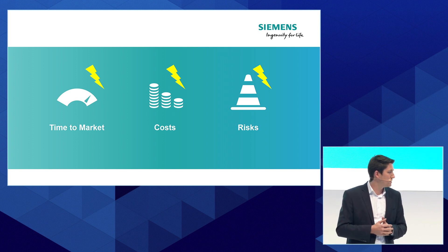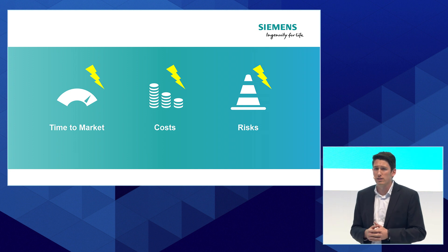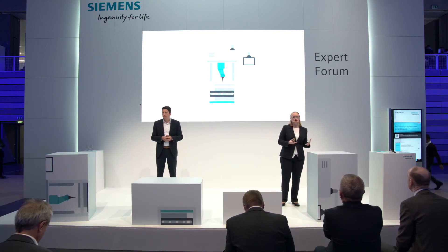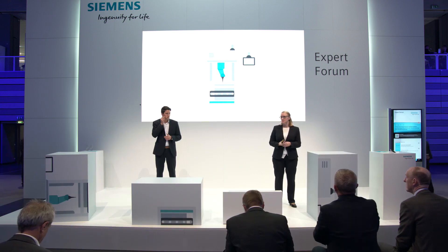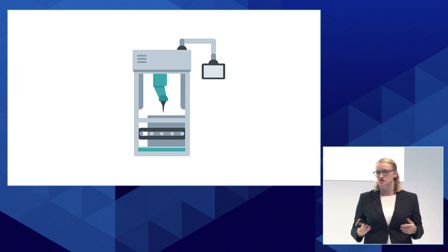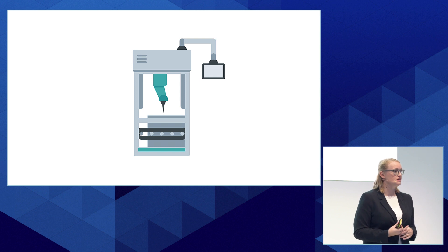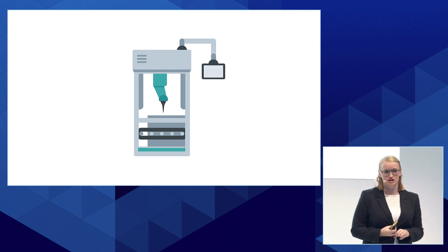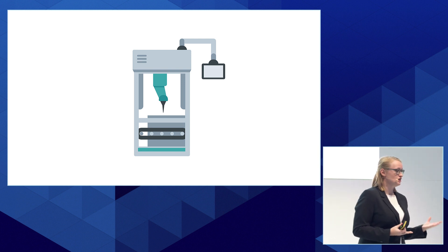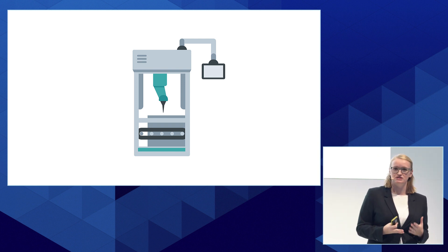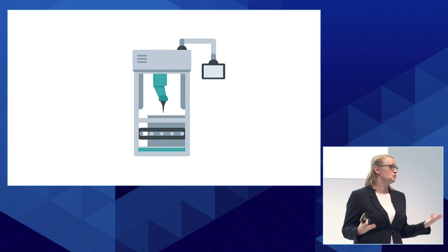But the question is, what are the effects of these challenges? Let's assume we have to develop this machine. In the traditional development process, each development step is proceeded serially. This means, first of all, you define the mechanical concept of a machine. Afterwards, you start with the mechanical construction. This is then followed by the electrical design, and after the electrical design is finished, you can start with the automation engineering. Each development step is dependent on the previous one. If any unexpected errors should occur, then the whole process is delayed.